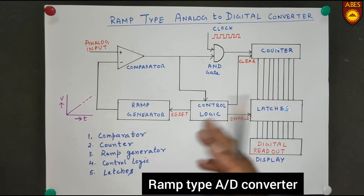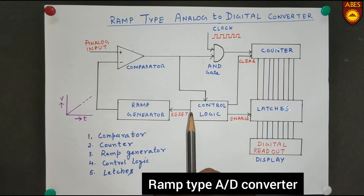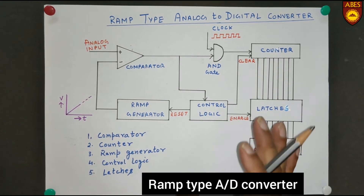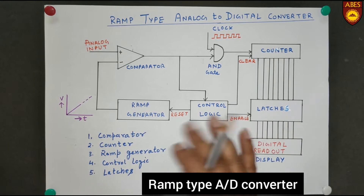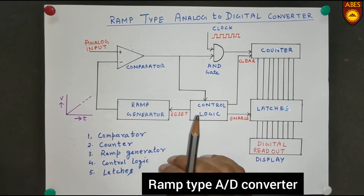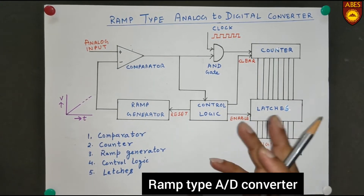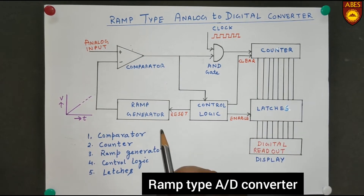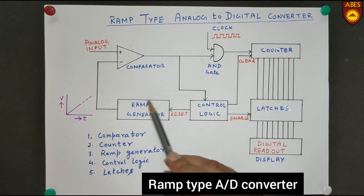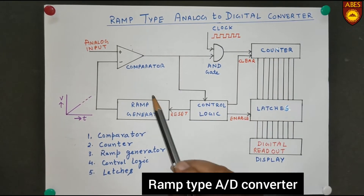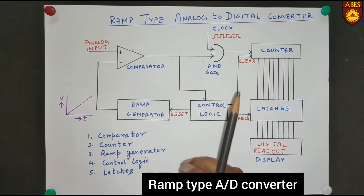The topic of discussion today is Analog to Digital Converter, specifically Ramp Type Analog to Digital Converter. An Analog to Digital Converter is a circuit which converts an analog signal into a digital signal. It is called Ramp Type because it uses a Ramp Generator in its circuit.